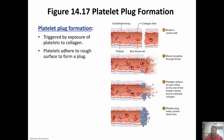Once the blood vessel breaks, it releases chemicals that attract platelets to the area. Positive feedback gets more platelets to the area through chemotaxis. Remember, there are only really two positive feedback mechanisms in the body that matter: childbirth and platelet plug formation. The platelets adhere to each other and to the rough edges of the cut and form a plug.